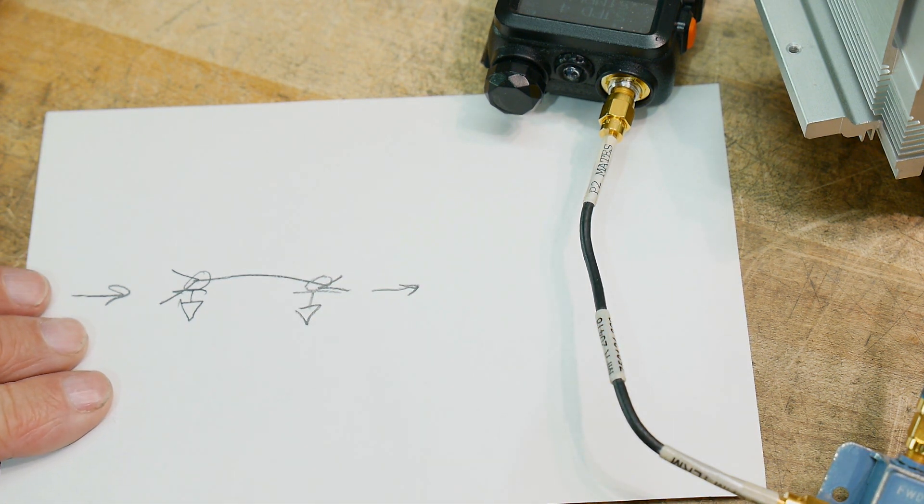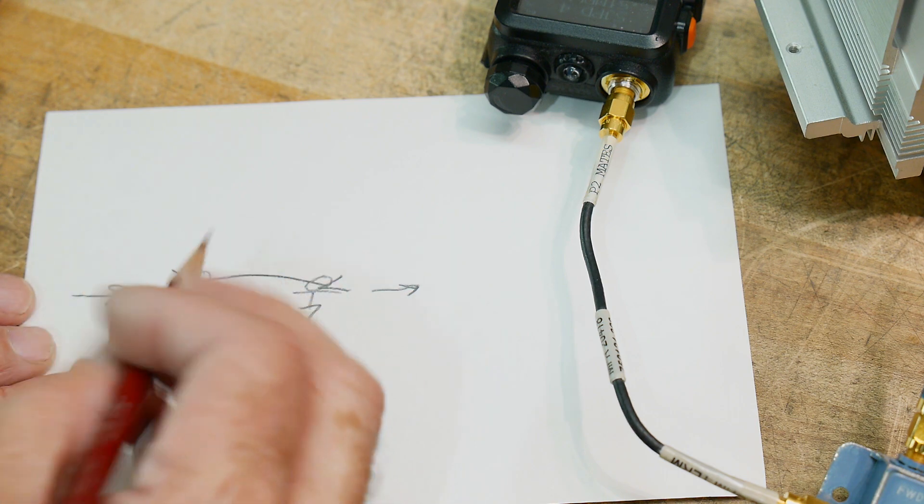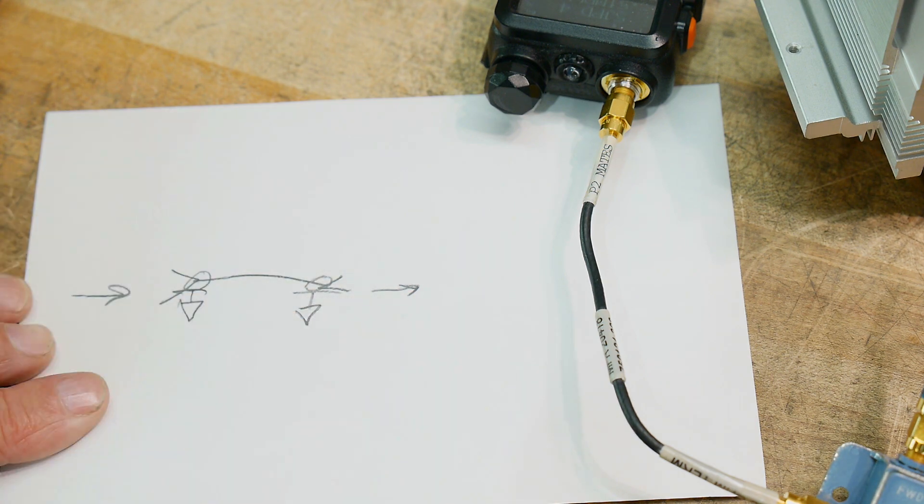And in fact, I'll show you, the coupler actually labels them input and output, so you know which is which. But what is a coupler?